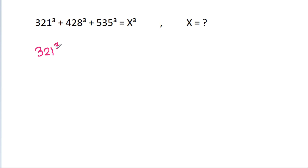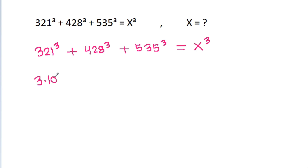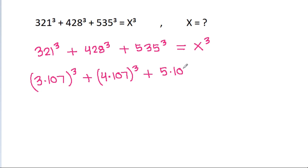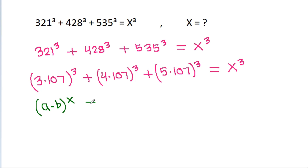We have 321 cube minus 428 cube minus 535 cube is equal to x cube. And 321 is 3 times 107, 428 is 4 times 107, and 535 is 5 times 107. And we know that a times b raised to power x is equal to a raised to x times b raised to x.